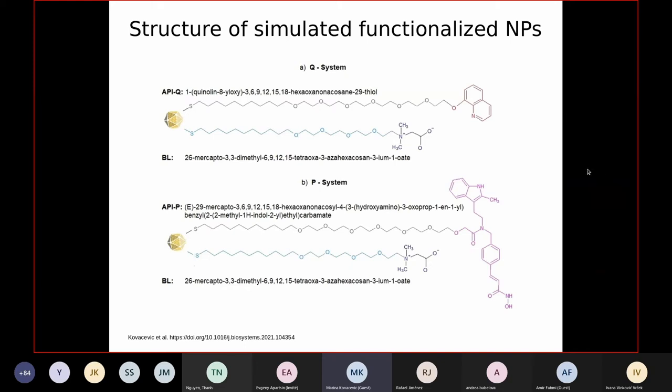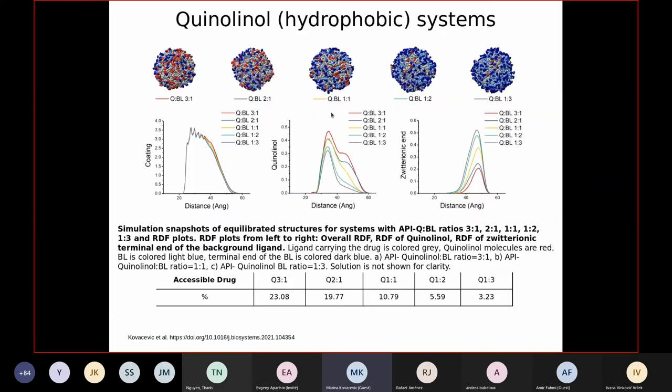The aim was to investigate how do physical chemical properties of the drug and some properties of the ligand affect the structure in a solution. So, to do that, throughout the simulations, we changed only two parameters. So, we changed either the used drug, while keeping the background ligand same, and also the ligand which carries the drug, or we simulated the same system, but varied the ratio of these ligands in the system, to see whether the initial concentration of these ligands has an effect on the structure.